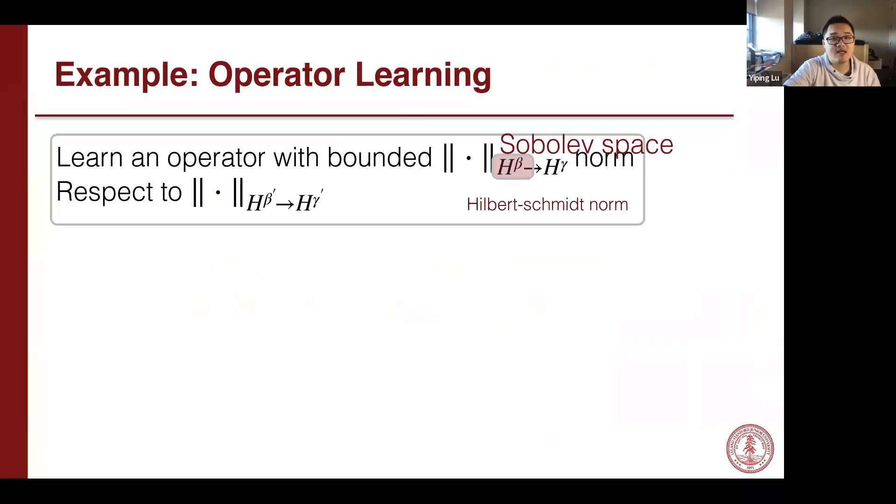So here is our setting. We aim to learn a linear operator with bounded operator norm from Sobolev space H_beta to another Sobolev space H_gamma. Here, beta is the index of the Sobolev space of the input space and gamma is the index of the Sobolev space in output space.